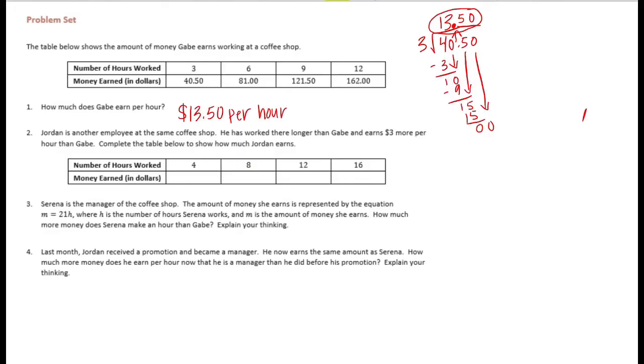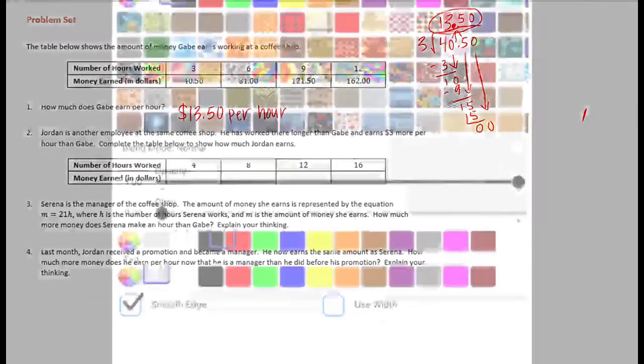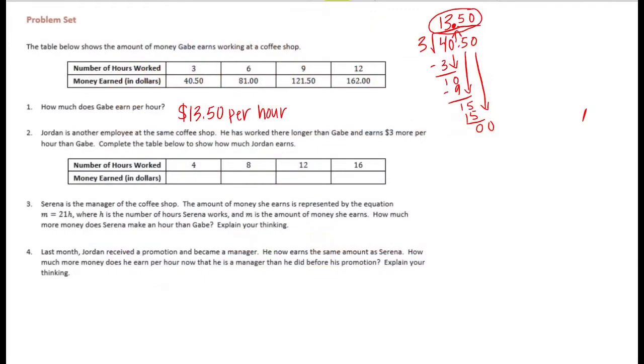Number 2, Jordan is another employee at the same coffee shop. He has worked there longer than Gabe and earns $3.00 more per hour than Gabe. Complete the table to show how much Jordan earns. So if we do $13.50 plus 3, he's making $16.50 an hour.